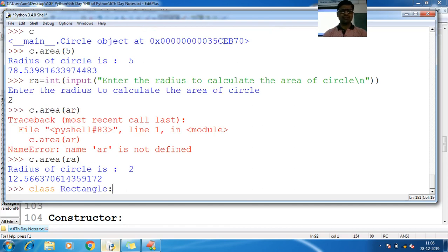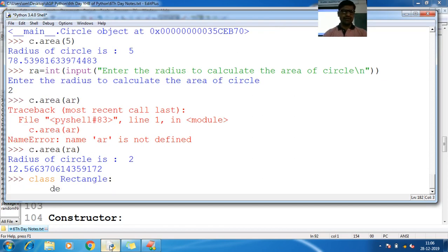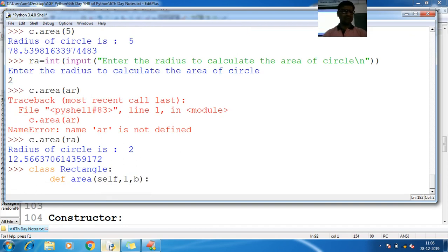Before I should finish your work, def area, what? Self comma l comma length comma breadth. I am going for short, I don't want to go for bigger names, l comma b. And let me calculate here length comma breadth.